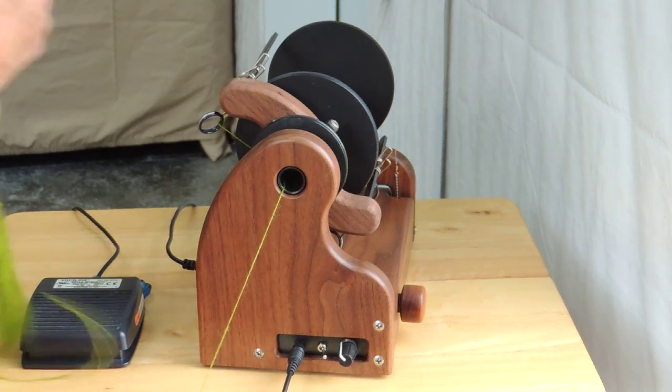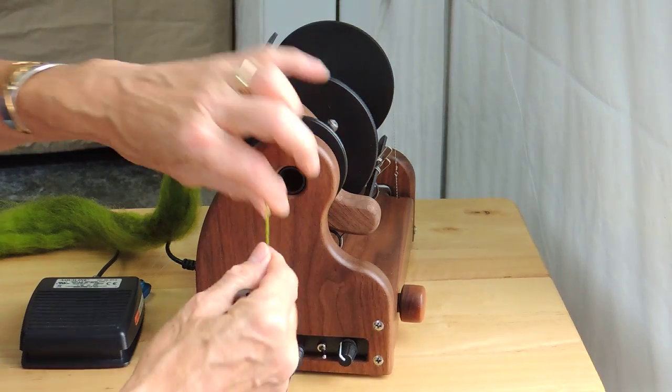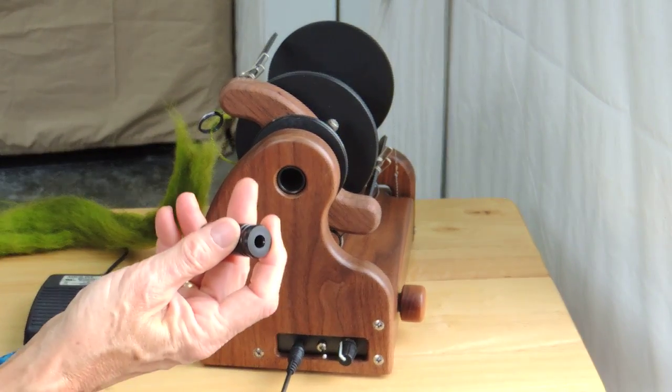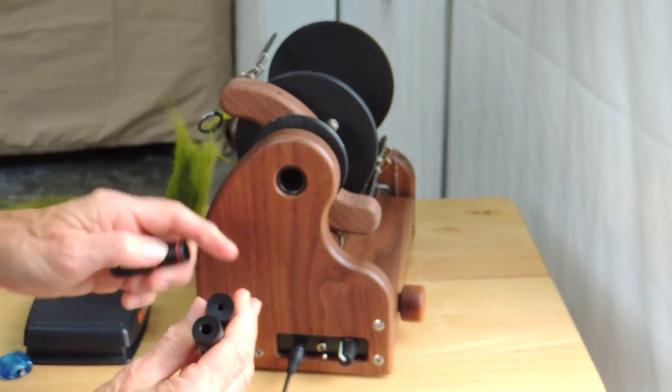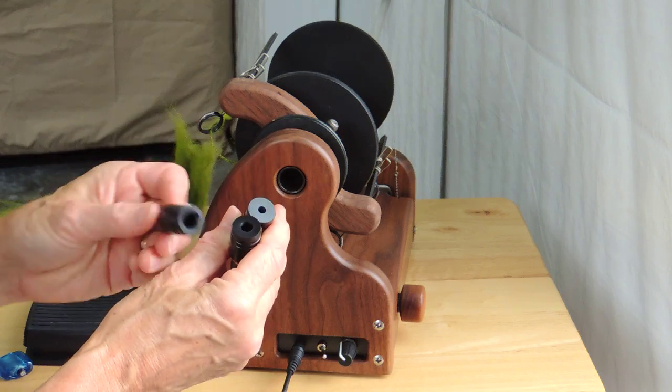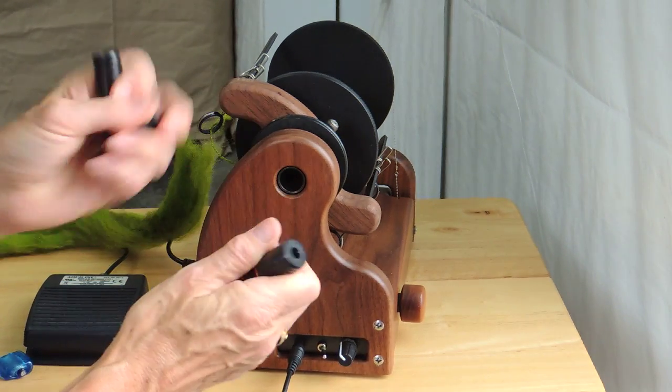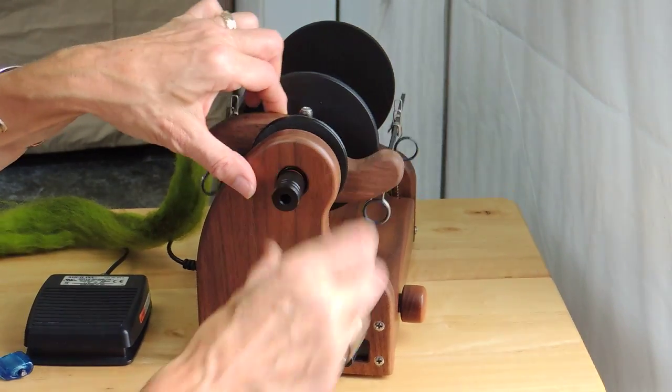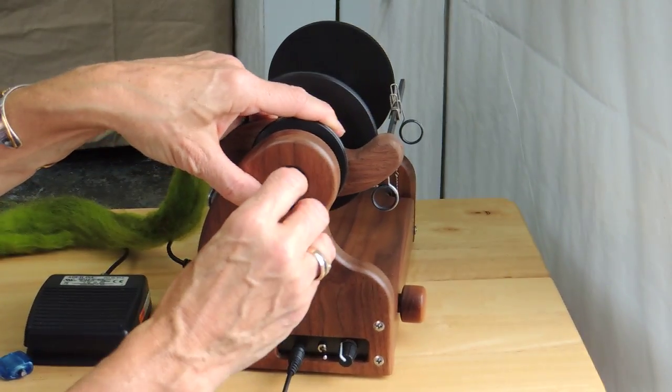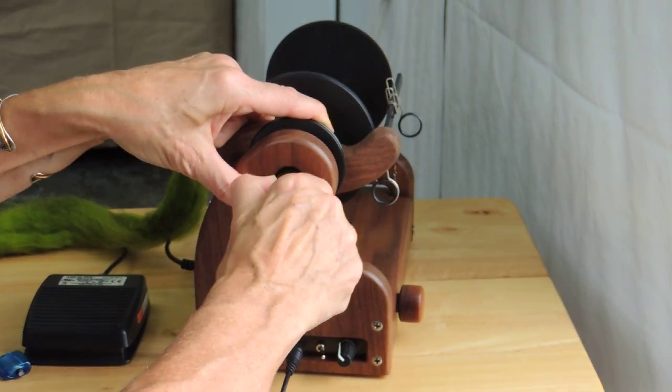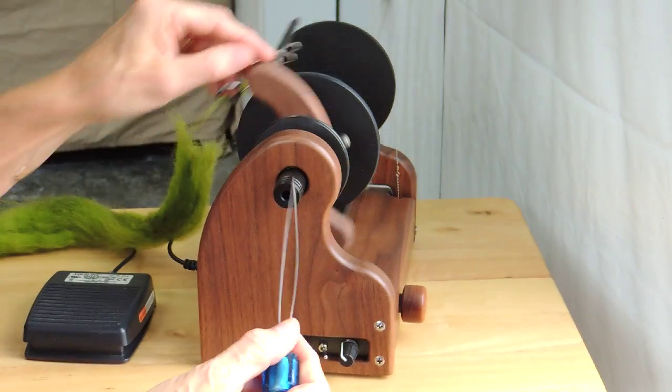So what we've done is we've made orifice reducers that come actually in three sizes, 1/8 inch, 1/4 inch and 3/8 inch. So for general spinning the 1/4 inch might be nicer so you just push the orifice reducer in, give it a twist and it's in place.